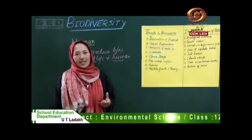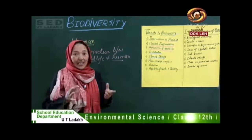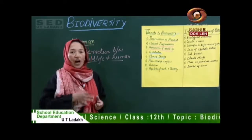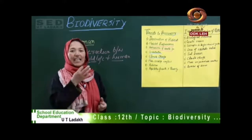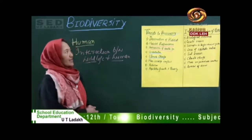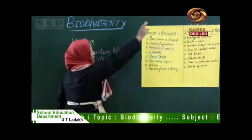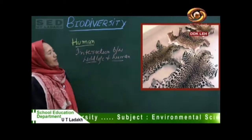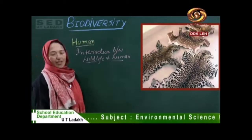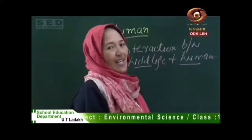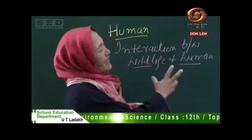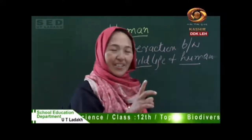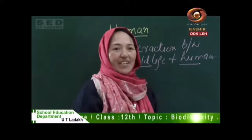So what happens to biodiversity? Threatened and endangered species are killed by wildlife and humans for many purposes. This is a picture of an animal killed for its skin. There are also animals killed by humans for ivory, medicine, and other purposes.